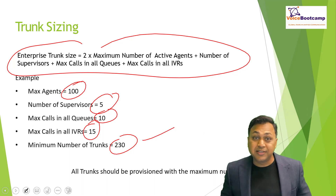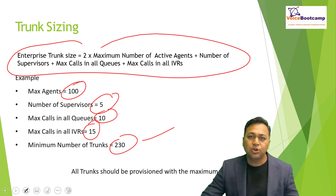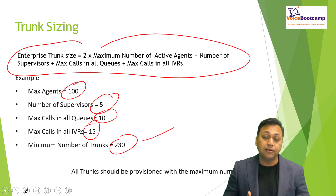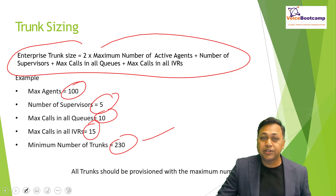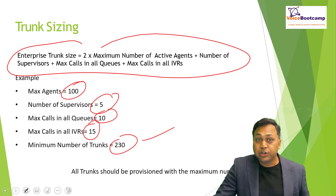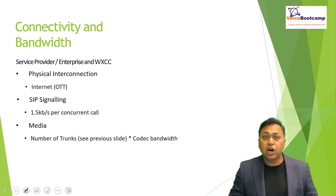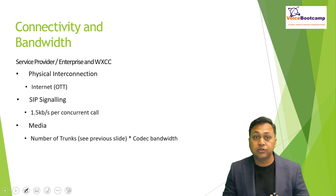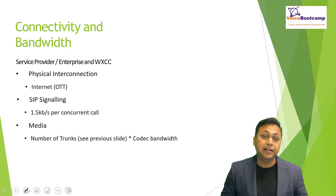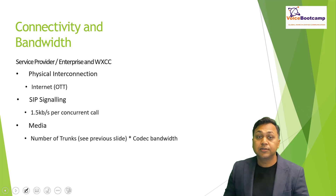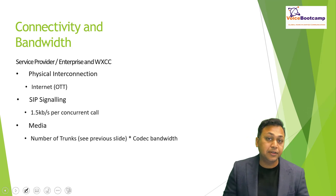This doesn't mean you need 230 trunks — it means trunks should be capable of handling 230 calls. What determines how many calls a trunk can handle? Bandwidth, equipment, the service provider, and cost — because the service provider will charge you for it. When a service provider creates a trunk with your organization, they will ask how many calls you want to allow at maximum, and can restrict that using max-connection on a Cisco gateway. For signaling, you need a minimum of 1.5 kilobits per concurrent call, and for media, you multiply the number of trunks by the codec bandwidth such as G.711 or G.729.